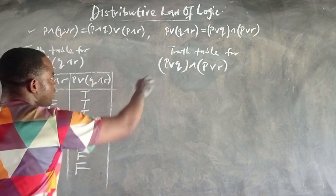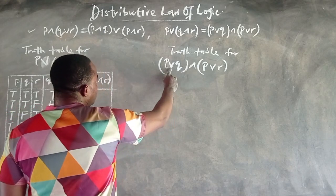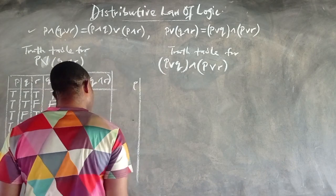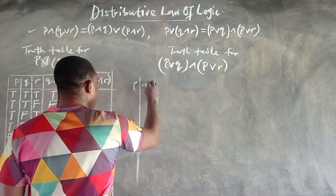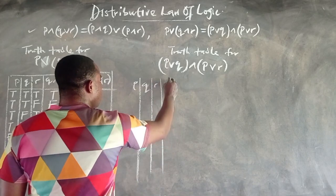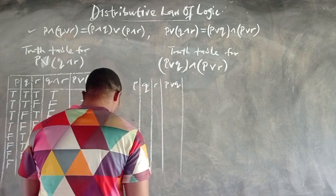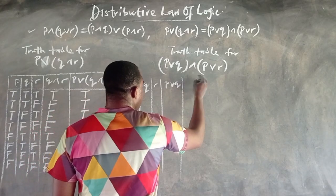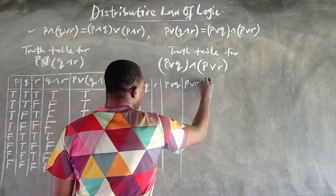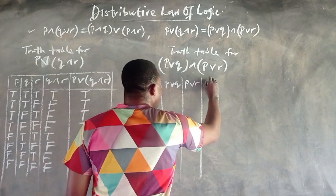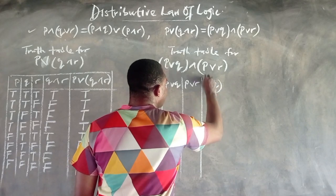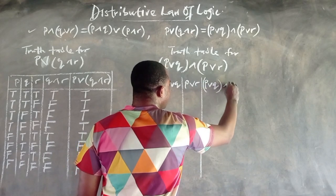Let's draw the truth table for the other statement to see if it gives the same result. We need P, Q, R, P∨Q, P∨R, and finally the compound statement (P∨Q)∧(P∨R).